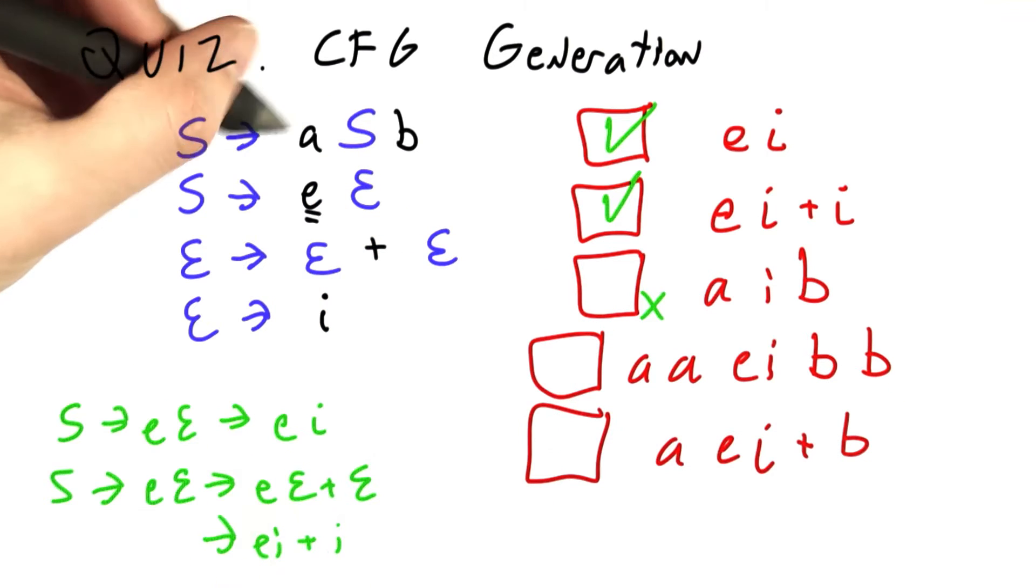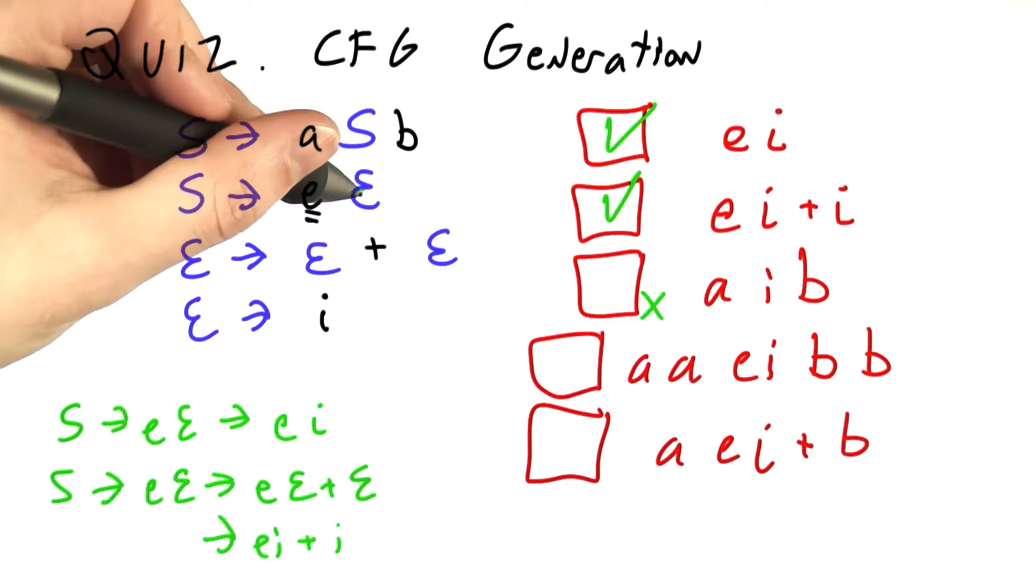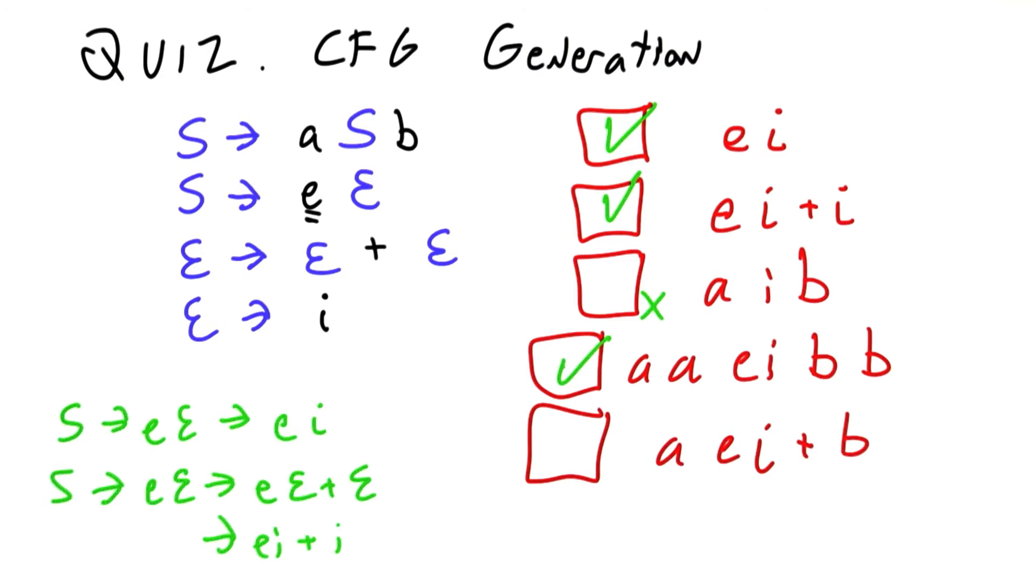How about this AABB? I can get that by looping around the first rule twice, and then EI. This string is in the language of the grammar.